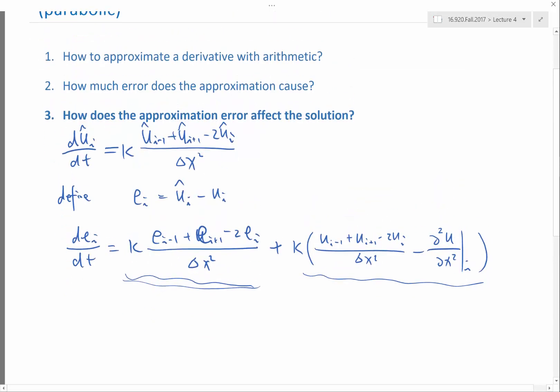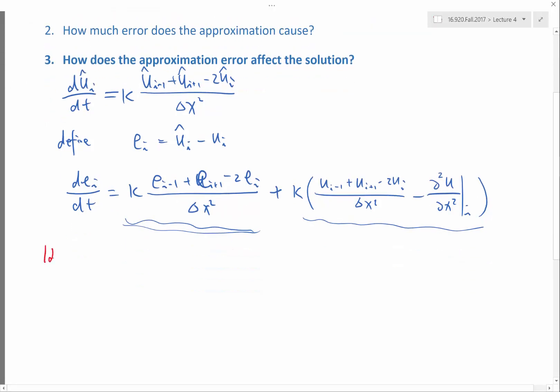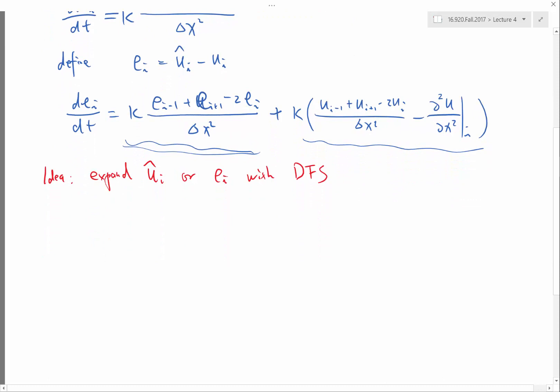So the idea is expand, it doesn't matter here, either UI or EI with discrete Fourier series. I'm just going to write it as DFS, and substitute into the finite difference operator. Let's see in this case how it works.